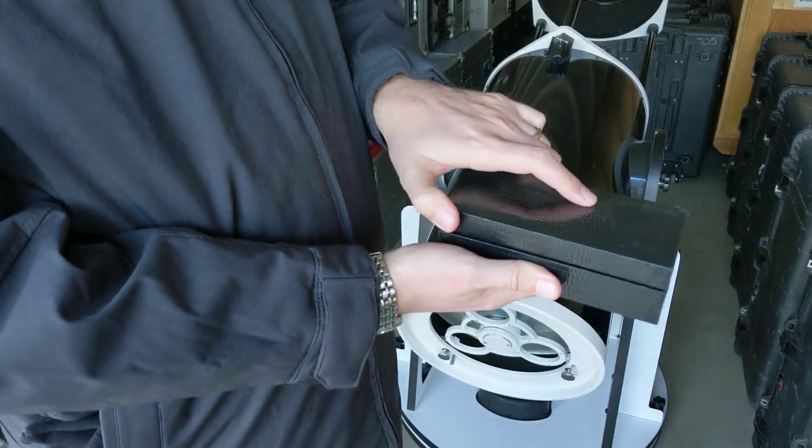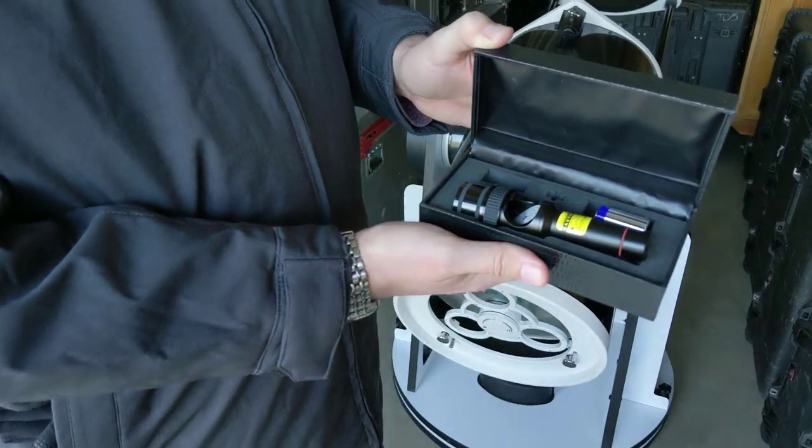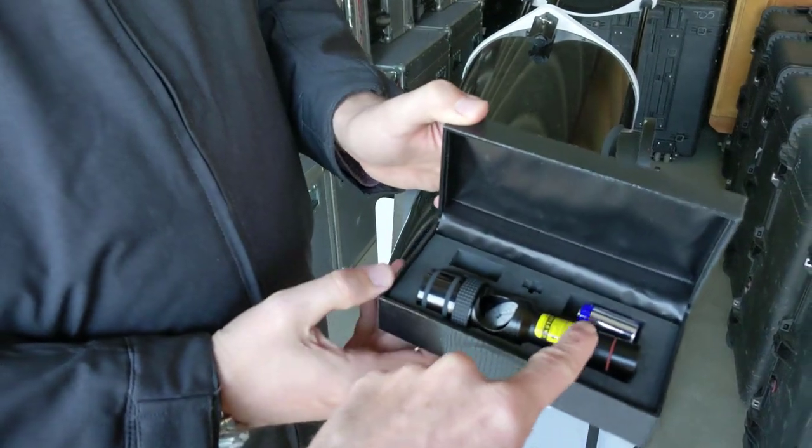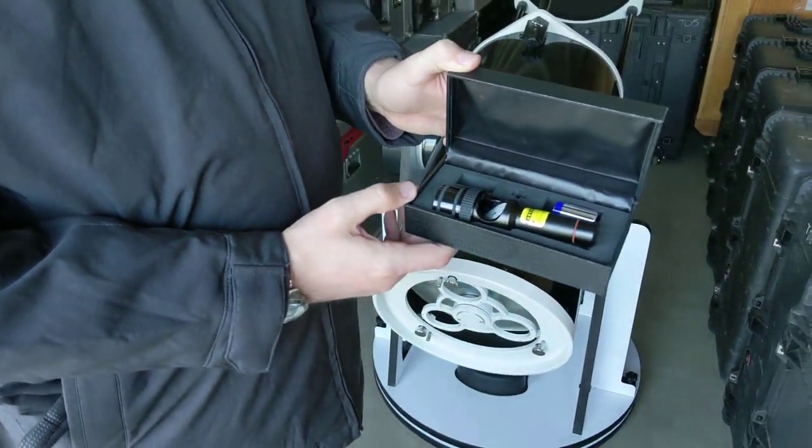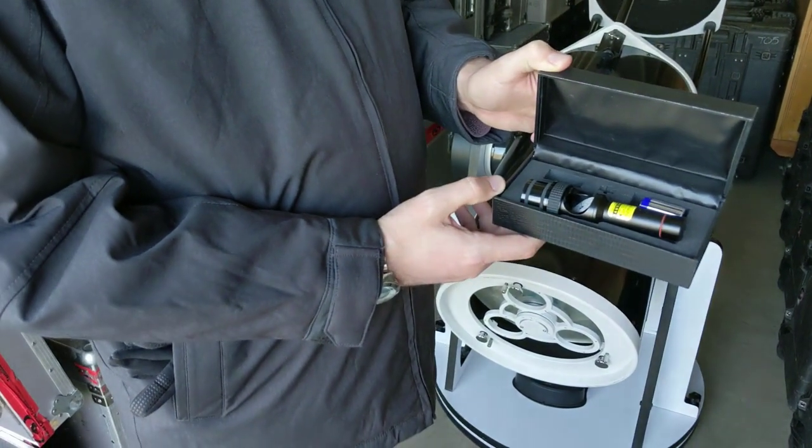This is the laser collimator box. Brian will open it and inside you see the collimator which is this device here plus the battery. We always store it with the battery out. So Brian is going to take this and install the battery.